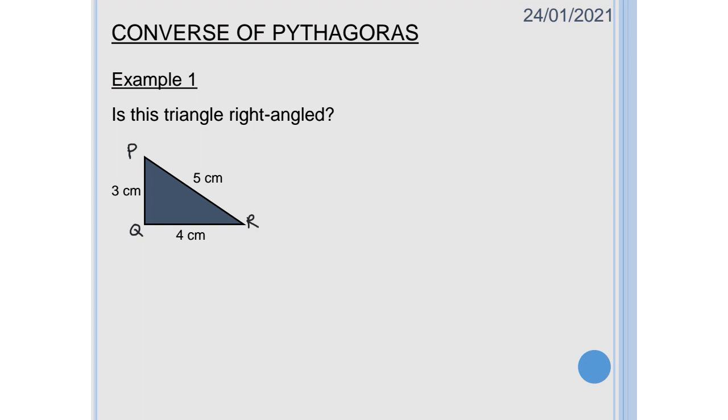So the first thing that I would always be doing is writing out Pythagoras' theorem. And as we know from previous videos we know that the longest side is always C and it doesn't really matter what side we make A or B as long as it's not the longest one.